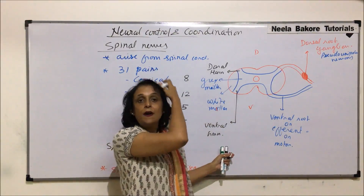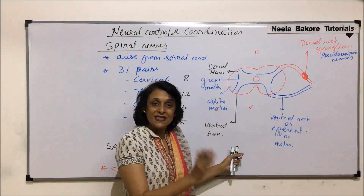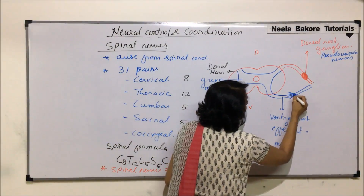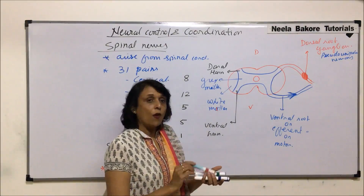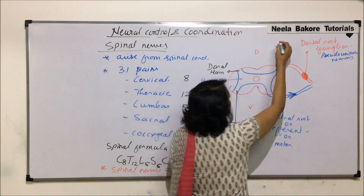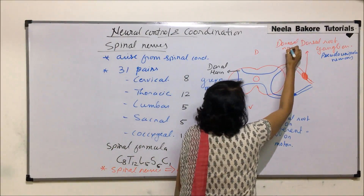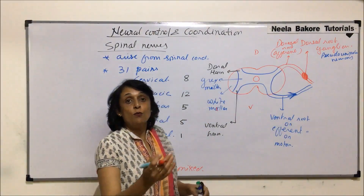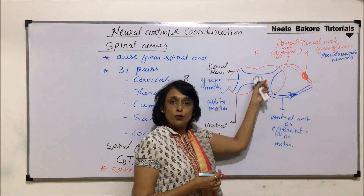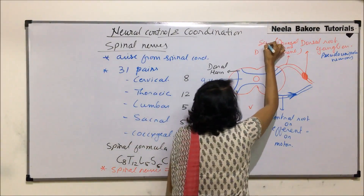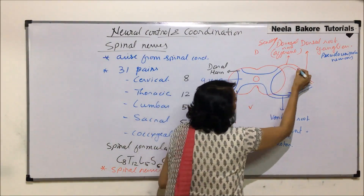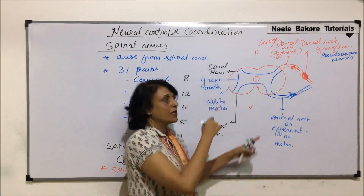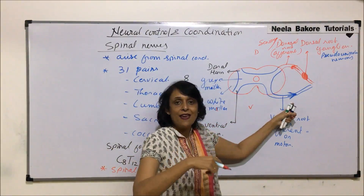Motor means a nerve which takes the message or stimulus from the CNS to the organ, so the direction is away from the spinal cord. The dorsal root is also called the afferent root. Because it brings messages or stimuli from the sense organs to the CNS, it is sensory. In sensory, the direction is towards the spinal cord; in motor, the direction is away from the spinal cord.